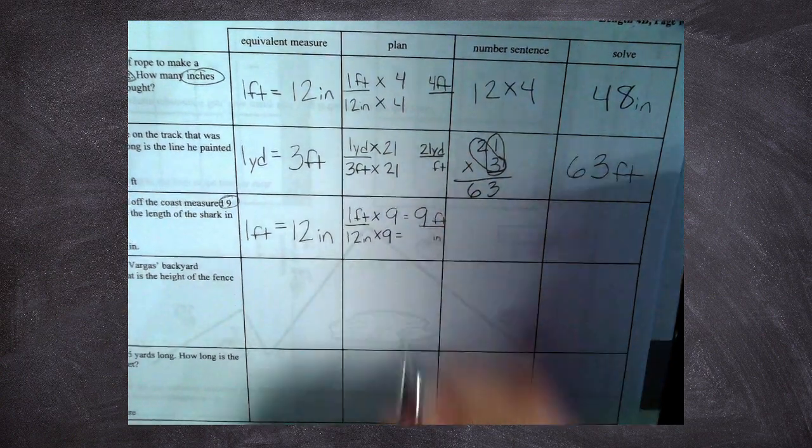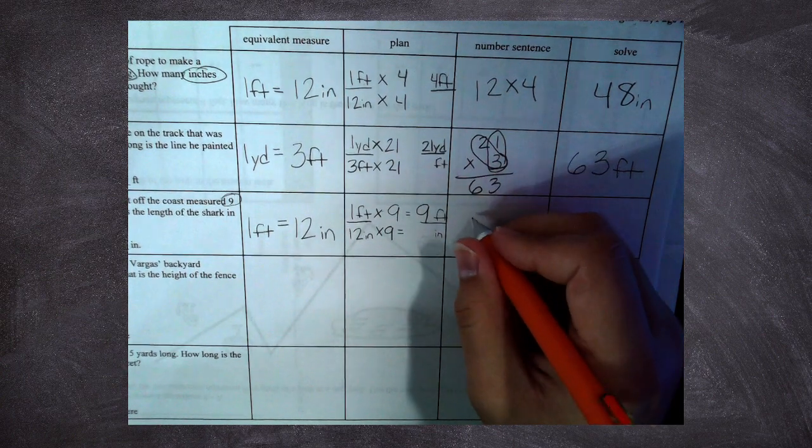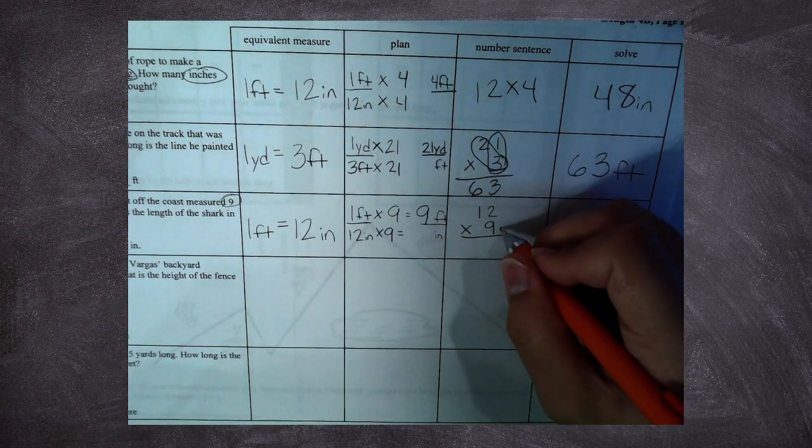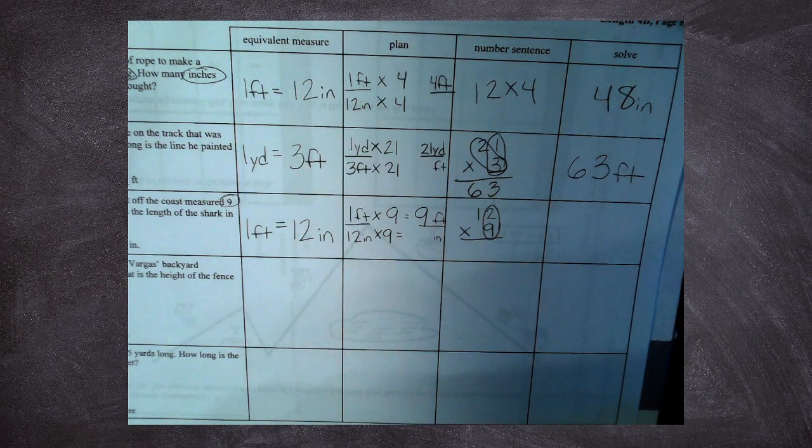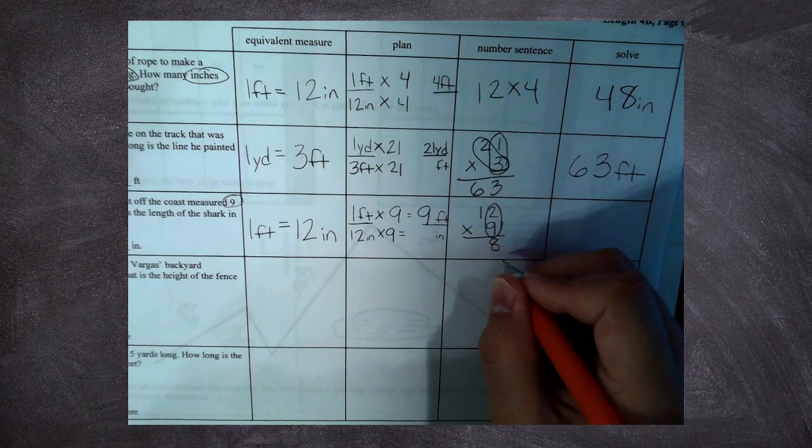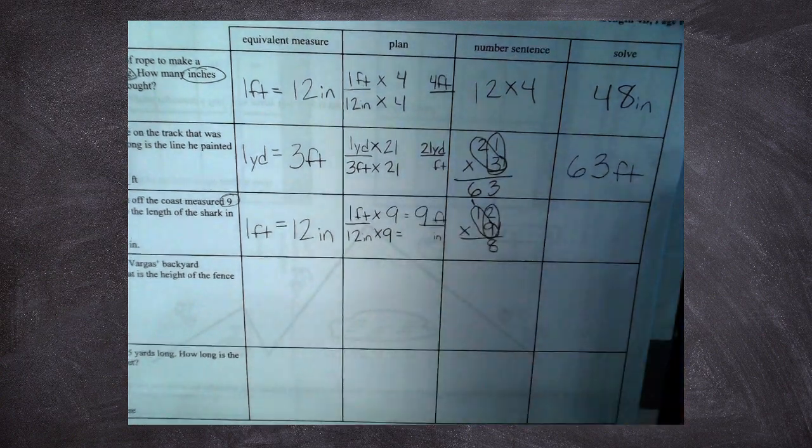Twelve times nine, so that's my number sentence. Twelve times nine. Let's do the math. Nine times two, what's nine times two? Alexa, nine times two is what? Nine times two, nine times two is eighteen. I can't just write eighteen down here, I have to put an eight, carry over a one.